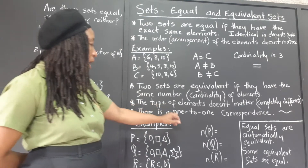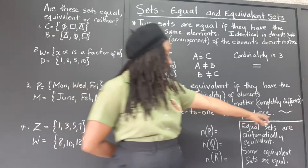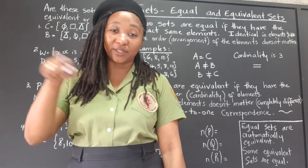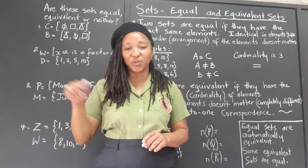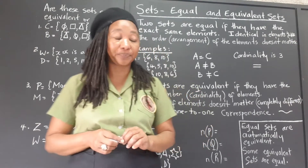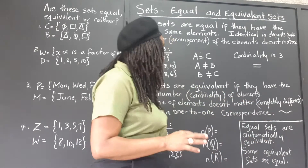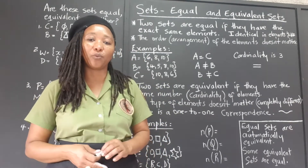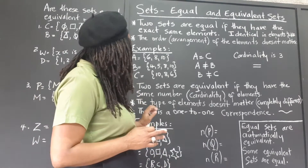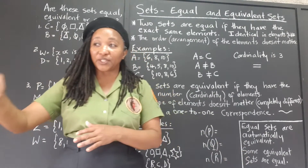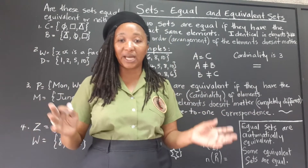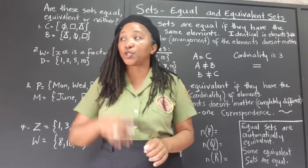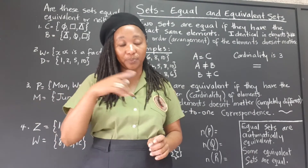There must be a one-to-one correspondence for the sets to be equivalent. This squiggly symbol here is what we use for equivalent — the same kind of squiggly lines used when you were just learning to write. Not equivalent would be that same squiggly line with a line drawn through it, because that's generally how we indicate 'not.' One-to-one correspondence means this one matches with that one — basically the same cardinality. There must be the same number of elements; we should be able to pair them up and match them with each other.